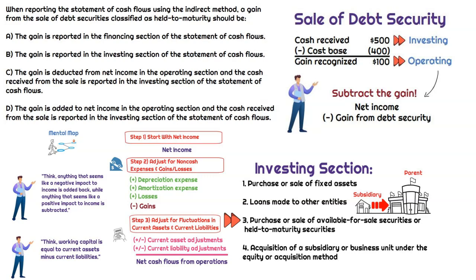Anytime we have a gain or loss reported in net income, when it comes to the cash flow statement, we're going to have to subtract out that gain or add back that loss. Otherwise, we will double count when preparing our cash flow statement. You would not be able to get your ending cash flow balance to match ending cash on the balance sheet because you wouldn't have treated this gain or loss properly. So it's very important to remember this key detail.